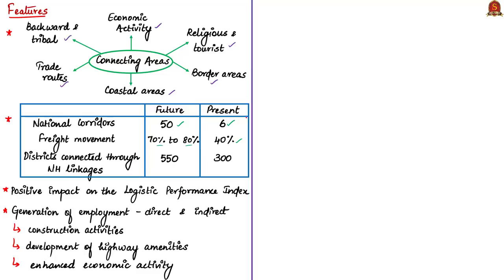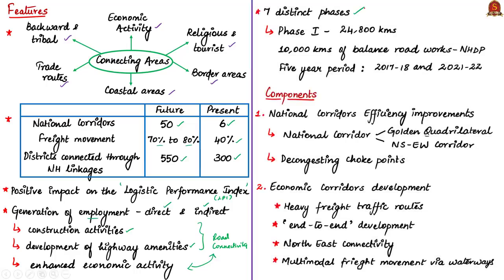The program will help connect 550 districts through national highway linkages, as currently only around 300 districts have such linkages. Bharat Mala will also positively impact the logistic performance index and generate a large number of direct and indirect employment through construction activities and development of highway amenities. Due to the sheer magnitude of the scheme, it will be divided into seven distinct phases. Currently only the first phase is under construction, covering a total of around 24,800 kilometers under Phase I of Bharat Mala Pariyojana.